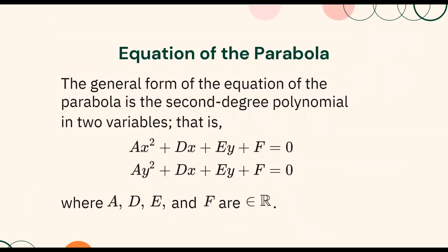Recall the general form of the equation of a parabola to be a second-degree polynomial in two variables: ax² plus dx plus ey plus f equals 0, or ay² plus dx plus ey plus f equals 0, where a, d, e, and f are elements of real numbers.